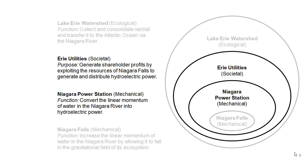One societal system in two different places can't necessarily perform the same way even if internally identical, because the ecological environment in which it resides will be completely different. Operating a hospital in New York City is very different from operating a hospital in London — not because the hospitals themselves differ that much internally, but because the ecology of the cities and nations in which they function may have very different support structures available.